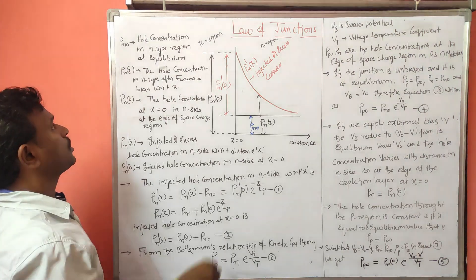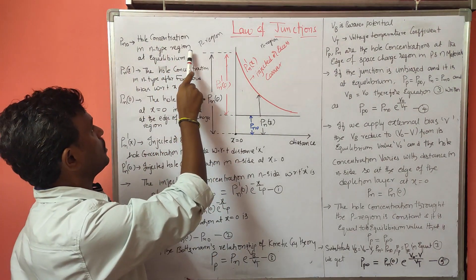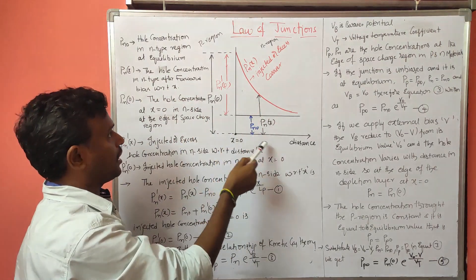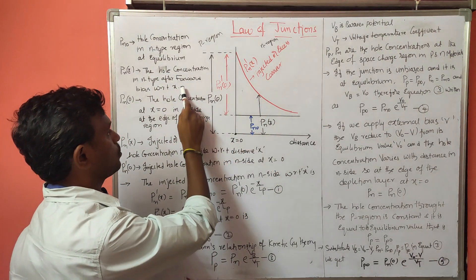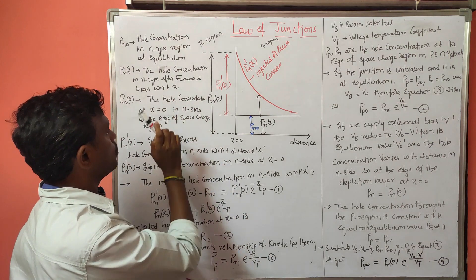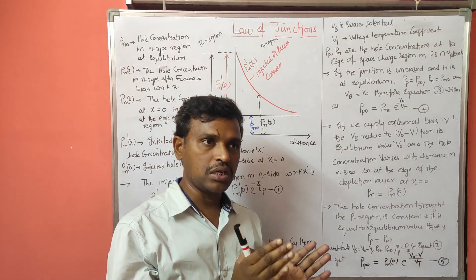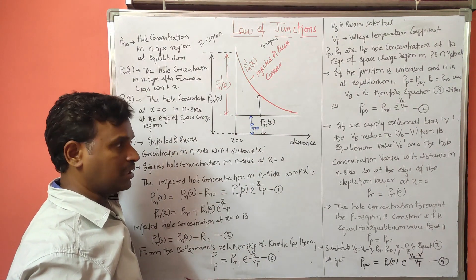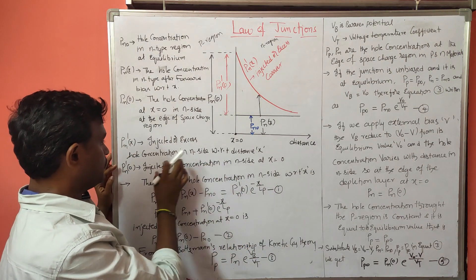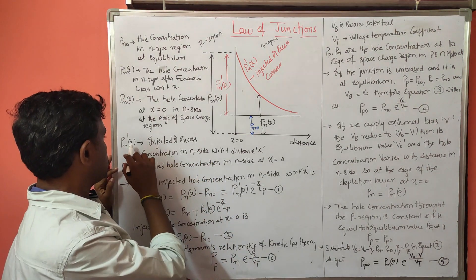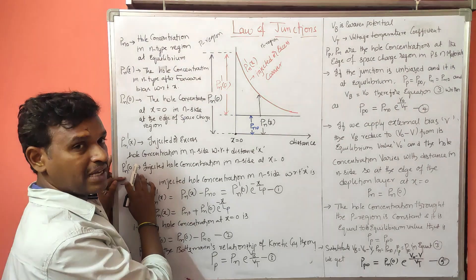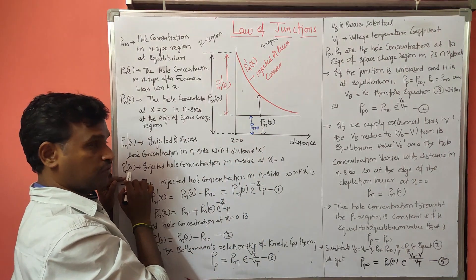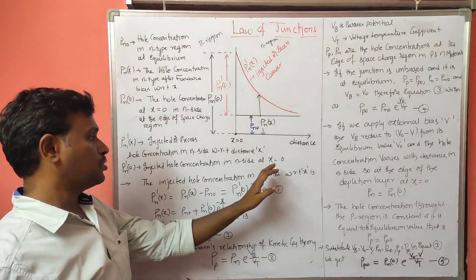These are the notations used here. pn0 is the hole concentration in the n-type region at equilibrium condition — it is a constant value. pn(x) is the hole concentration in the n-type semiconductor under forward bias with respect to distance x. pn(0) is the hole concentration in the n-type nearer to the junction. pn'(x) is the injected excess carrier concentration with respect to x. At x equal to 0, pn'(0) is the injected hole concentration in n-type at the junction.